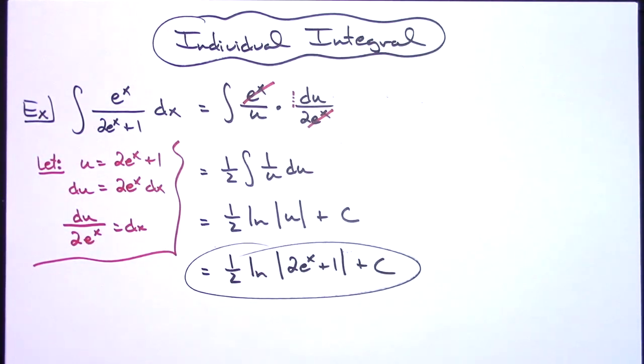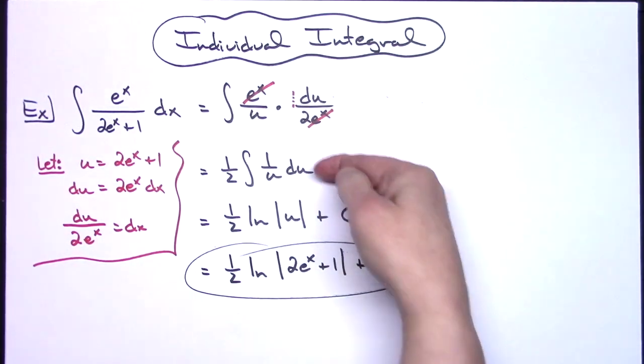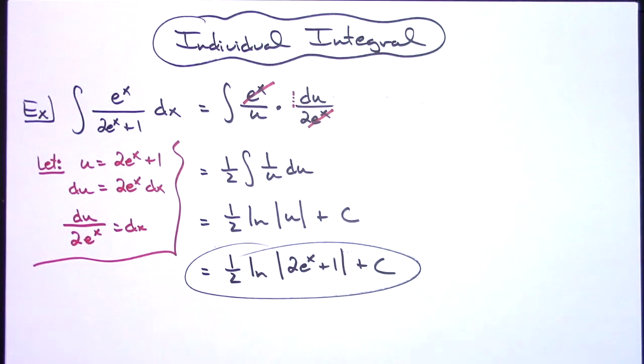So definitely a straightforward u substitution there with that integral of the one over u which gives you that natural log absolute value of u.